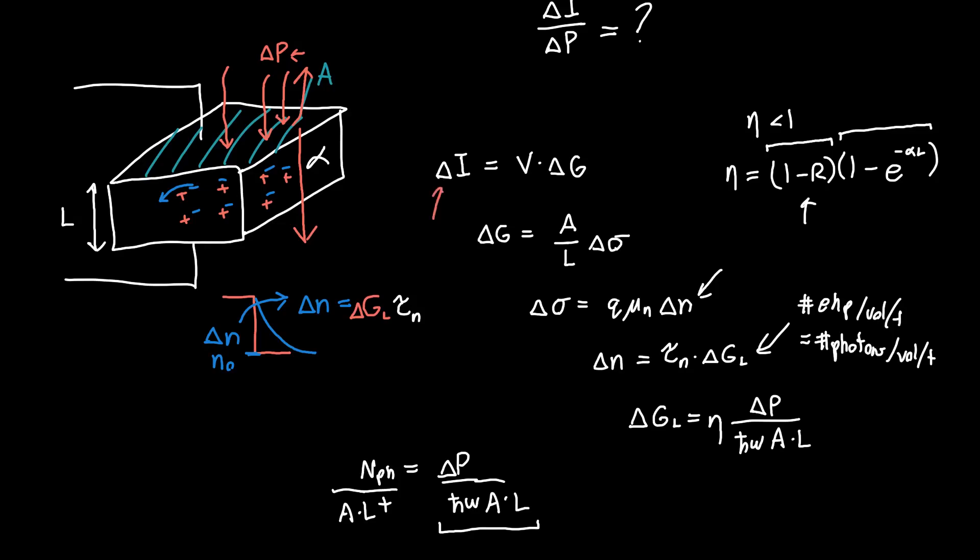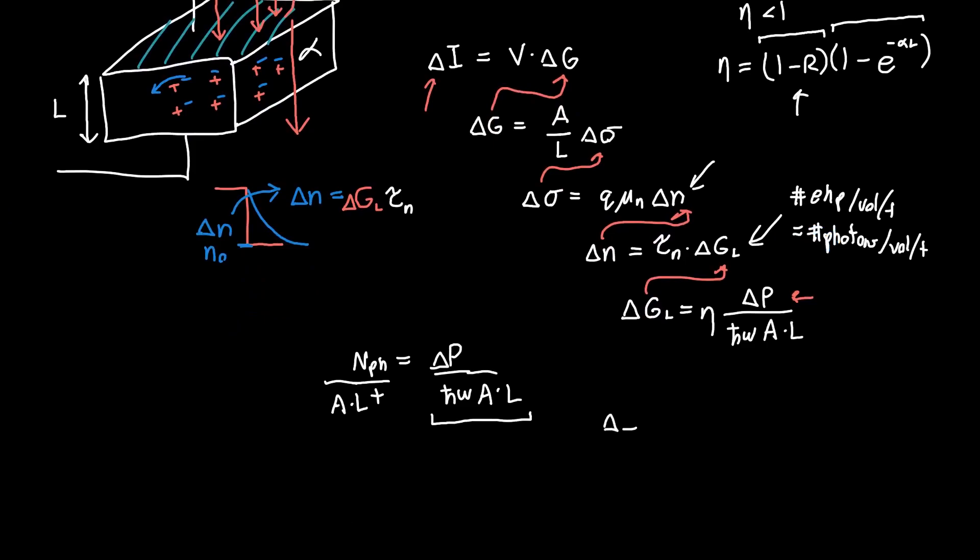So now we have delta I in terms of delta P. We just need to successively plug in all of these values that we've found one by one. If you plug everything in, you should get...